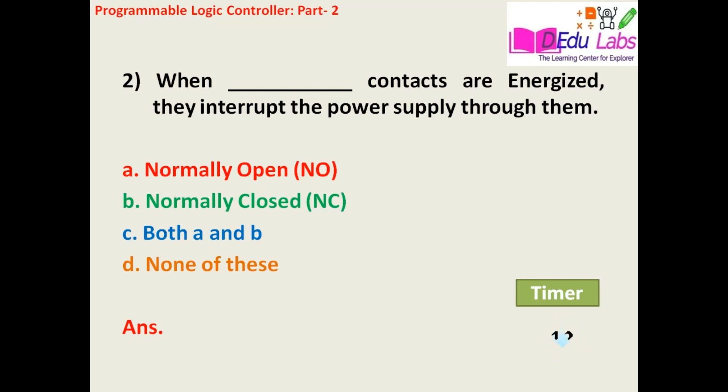The answer is normally closed, that is NC contacts. The NC contacts initially are closed contacts, and when they are energized they will change from closed to open contacts, so the circuit will be open. The answer is option number B.